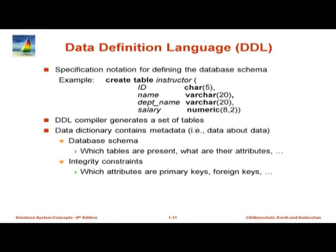The data definition language is exemplified by a code sample like: create table instructor with id as char(5), name as varchar(20), salary as numeric, and so on. When you give this command to a database it creates a table and stores the name of the table, the attribute names, the types, and later constraints, as part of a data dictionary. When you store data, the database system makes sure it has the right attributes, the right type, and satisfies the integrity constraints.